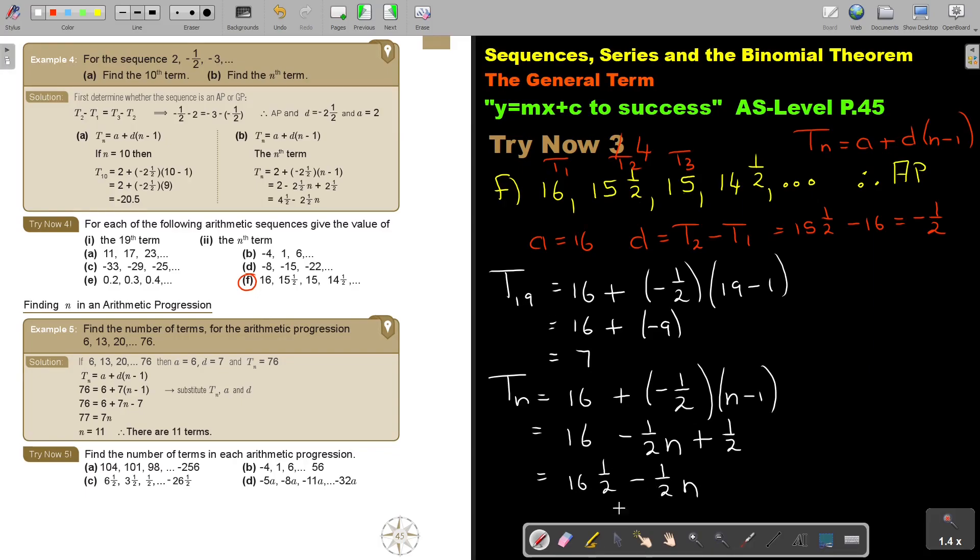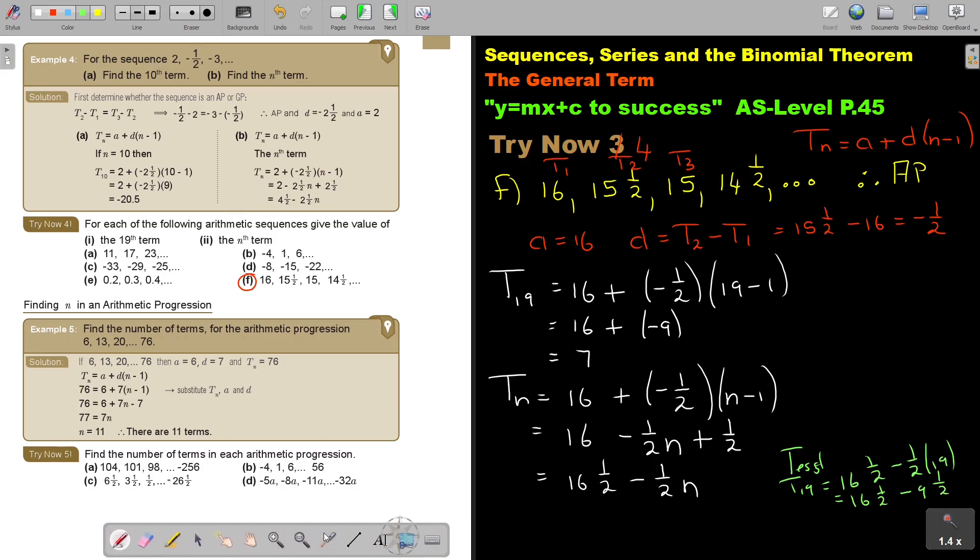And if I was asking you the 19th term, then you could have said just directly. Can I just show it to you here? Let's just test. T19. You could have just say 16½ minus ½ and 19. And that would have gave you 16½ minus 9. Let's just see. That would have been 8 and 9½. Let's just quickly see here. So, it's 16½ minus 9½. And that would have given you the half cancel. That would have also gave you the 7.